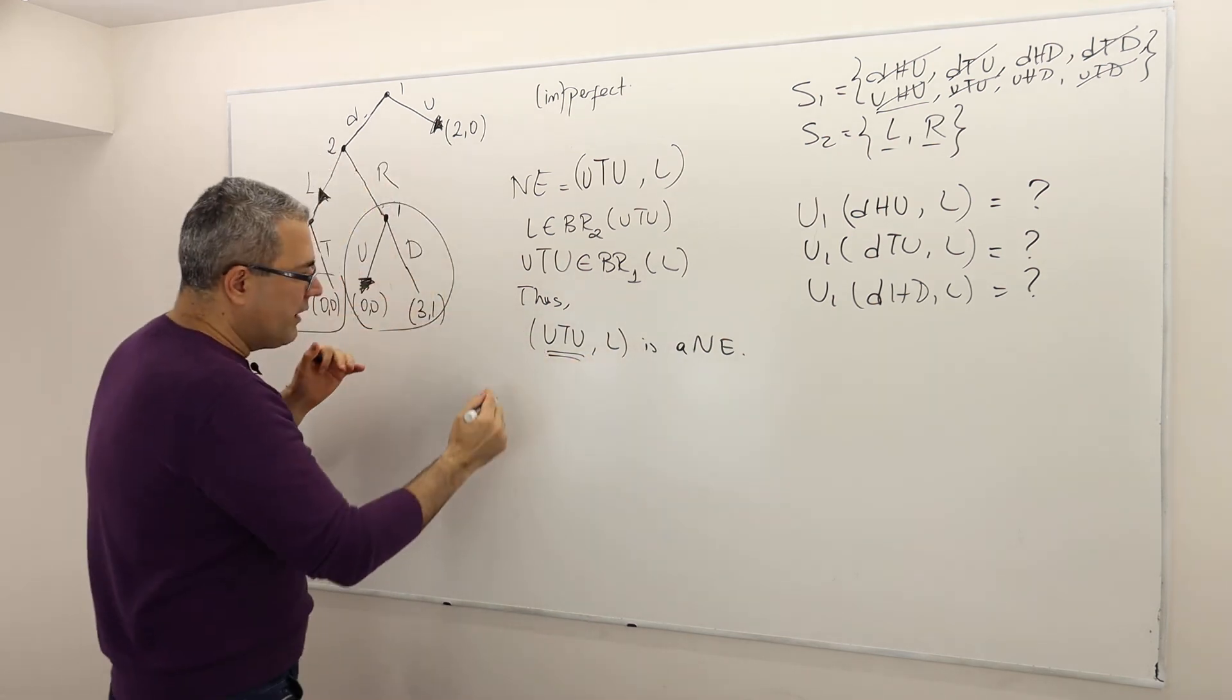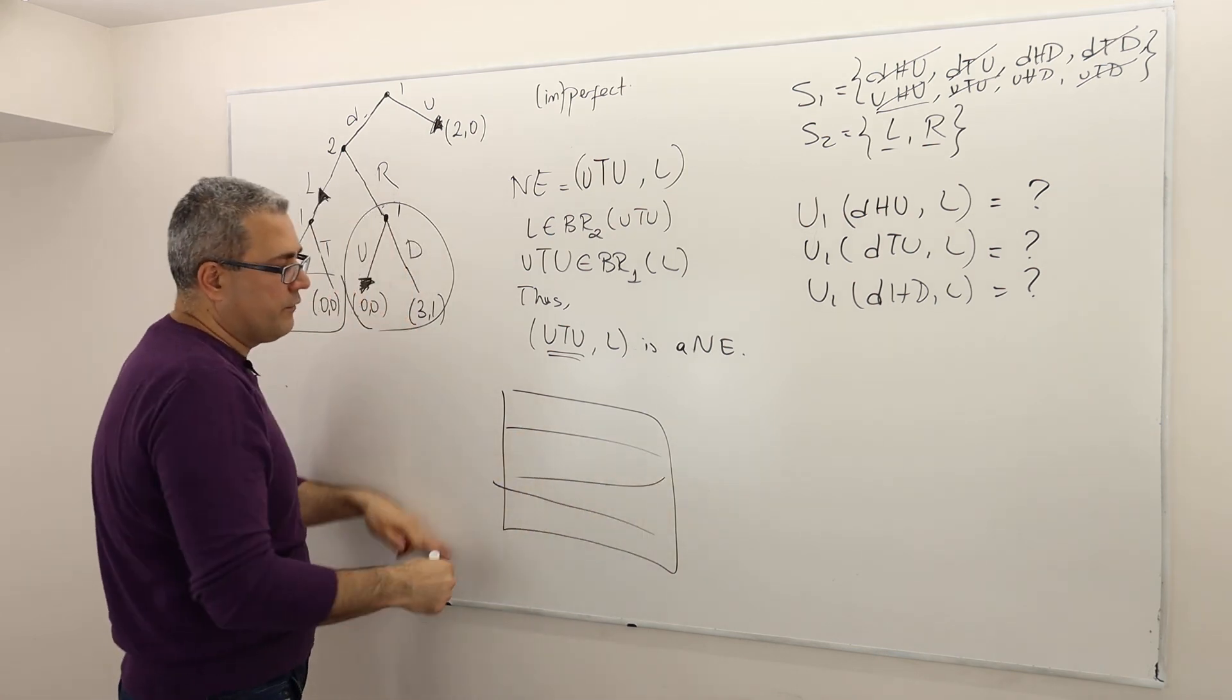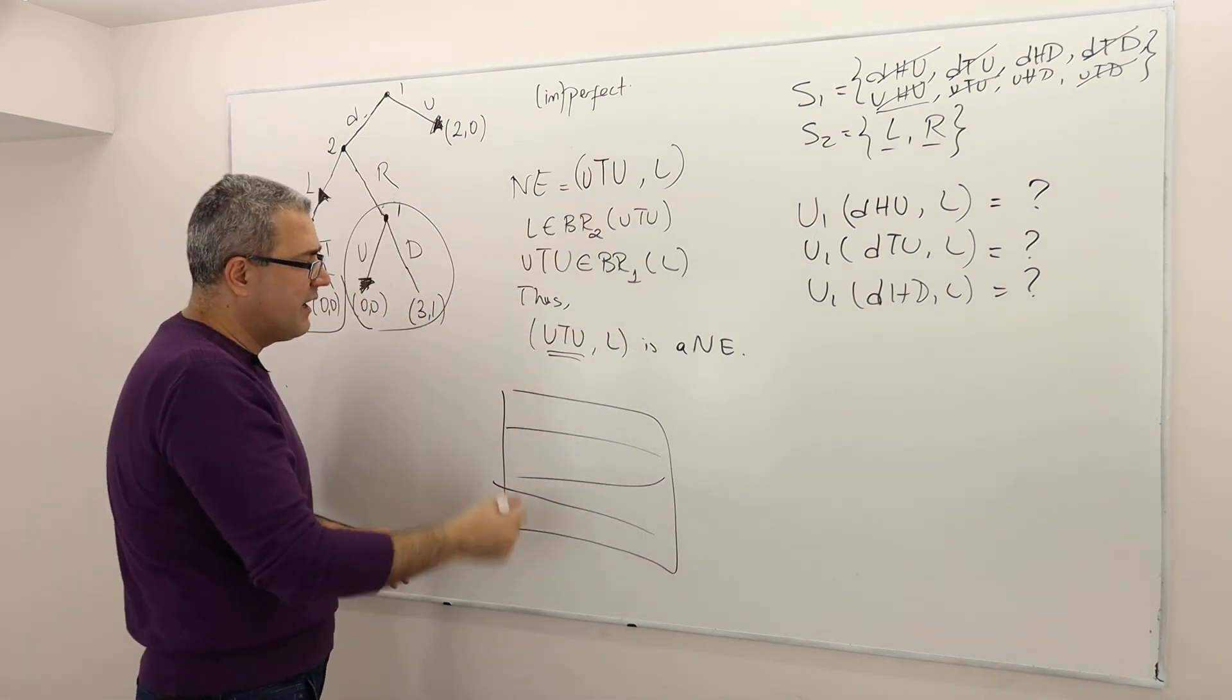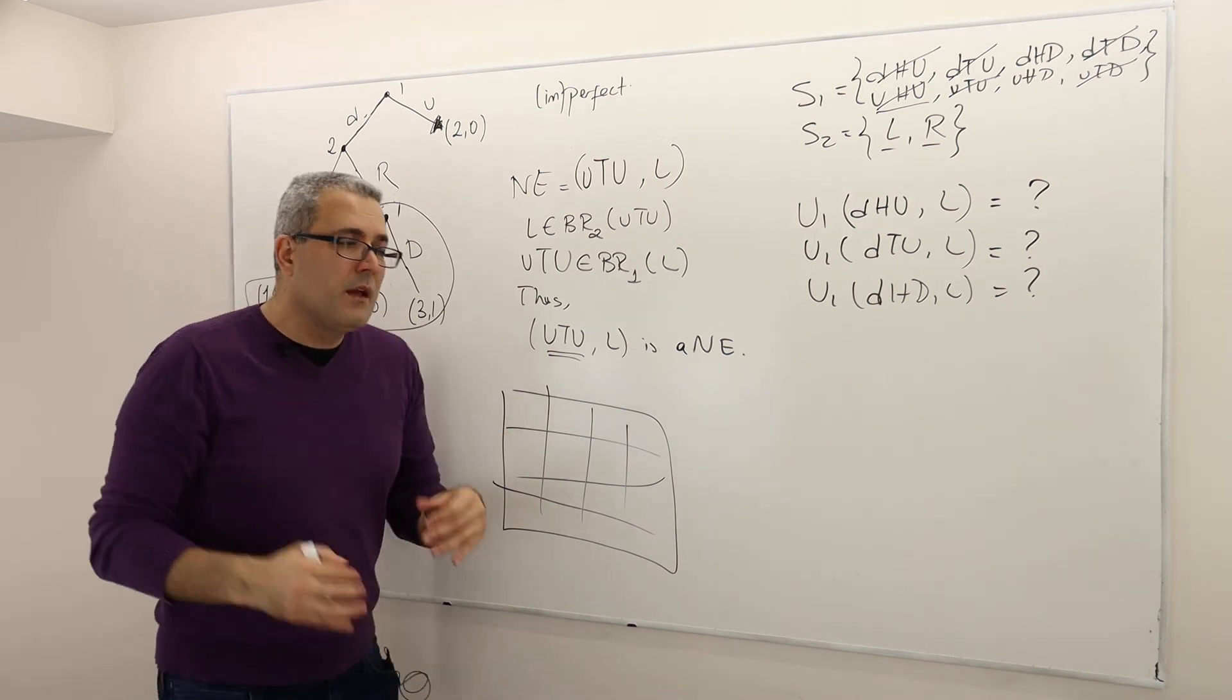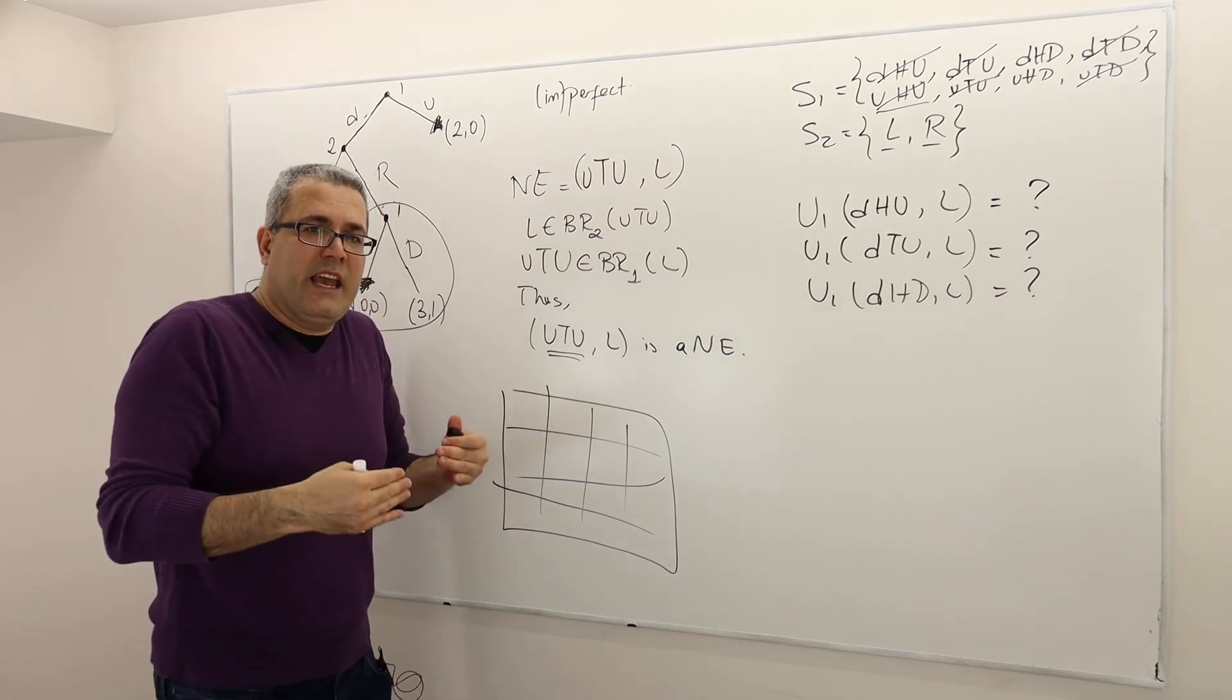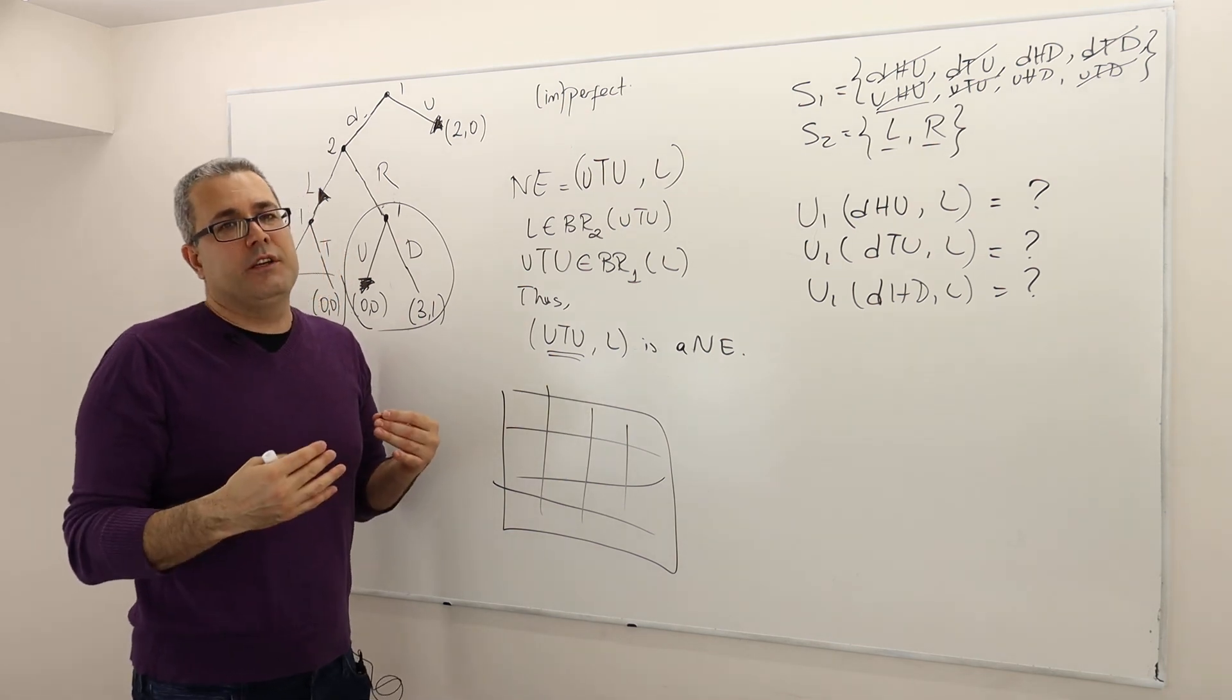Remember, we write the normal form representation. These are the strategies of player one—he has eight. And these are strategies for player two. Before they start the game, we are asking them to choose a strategy.